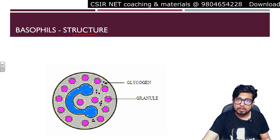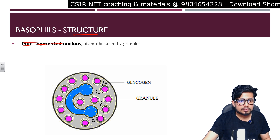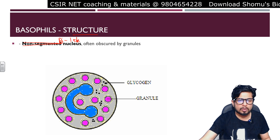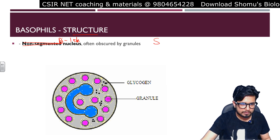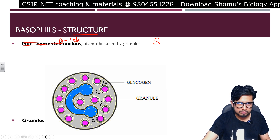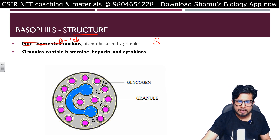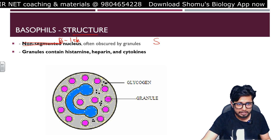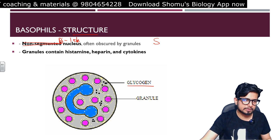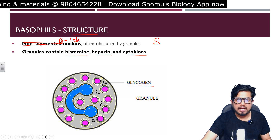Now let's look at the structure of basophils. Basophils have a generally bilobed nucleus — sometimes it looks like an S-shape — and the nucleus is obscured by granules. They are granule-filled cells, and you can also see some amount of glycogen. The granules contain histamine, heparin, and cytokines as predominant components.